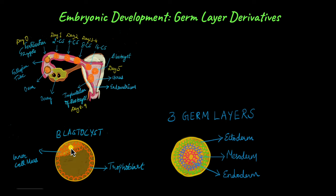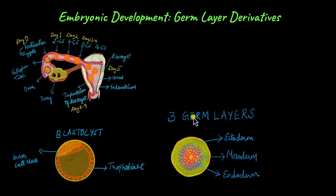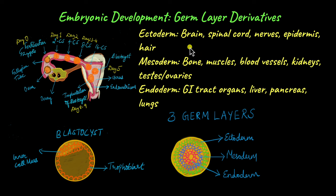Immediately after the blastocyst is implanted, the inner cell mass begins to divide and forms the three germ layers: the outer ectoderm, the middle mesoderm, and the inner endoderm. It is from these three layers that all cells and tissues in the body are produced. Take a look at the different tissues the different layers give rise to.